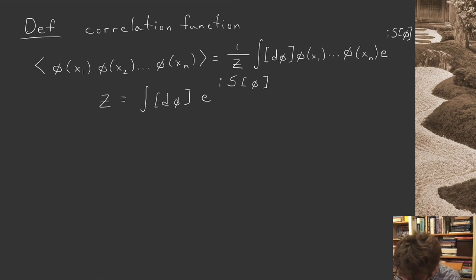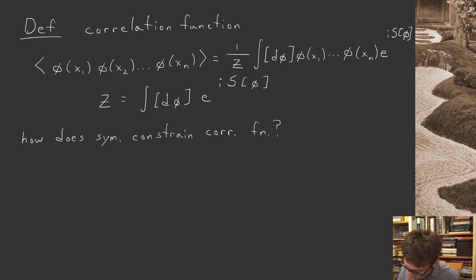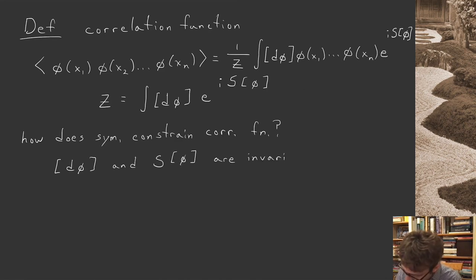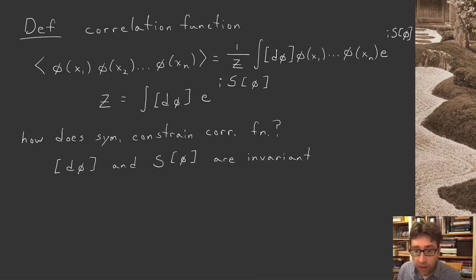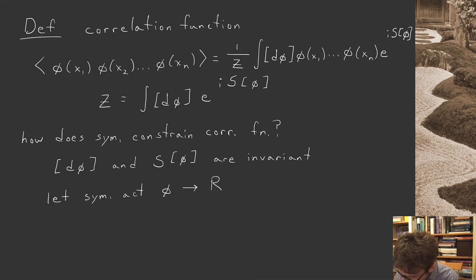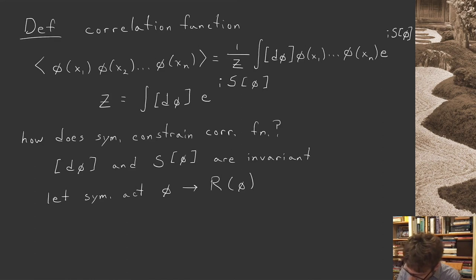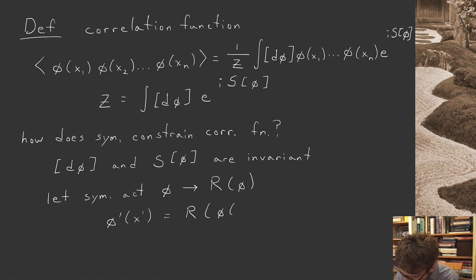What I'd like to discuss today is how symmetry constrains such an object. The symmetry means that the measure of the path integral and the action are invariant — if we perform a symmetry operation on the field, the measure doesn't change and the action doesn't change. Let the symmetry act by sending the field phi to r acting on the field phi. In our old notation, we had the conformal symmetry acting on a field and the position it was located on; in the new notation, this is what I mean by r acting on phi of x.